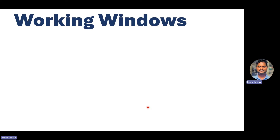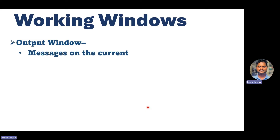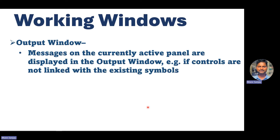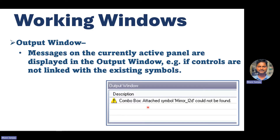The next working window is the Output Window. Messages on the currently active panel are displayed in the output window. For example, if your controls are not linked with an existing symbol, you can see that information and the message is displayed in the output window - it tells you that a control is not connected or not attached.